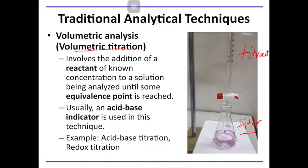Thus, we have three things here. First, the volume of a known substance with known concentration that reacts. Second, the known volume of the substance with unknown concentration. And third, the indicator. An indicator tells whether or not the reaction has been completed. It tells when the substance of known concentration fully reacts with the substance of unknown concentration by the relative changes in the pH of the solution. Therefore, this method is widely used in acid-base titration and redox titration.